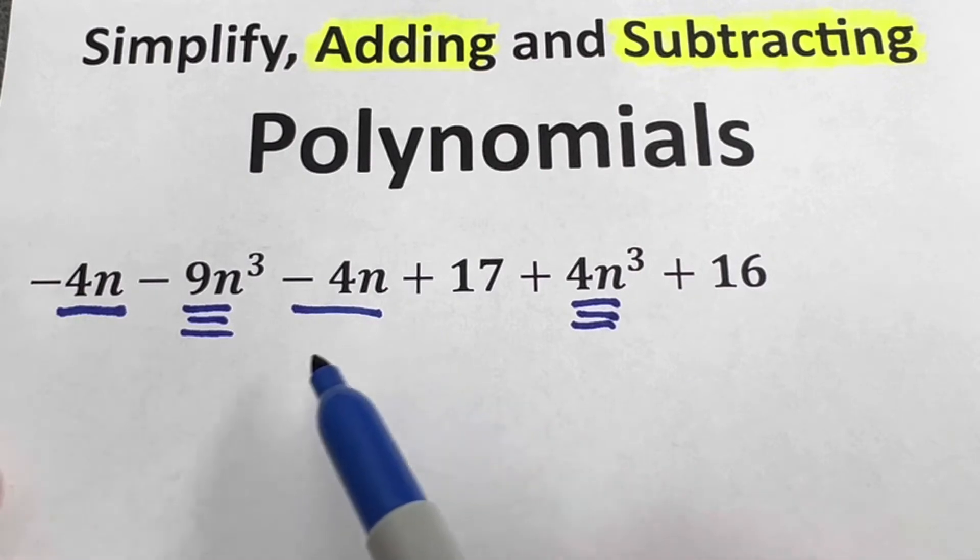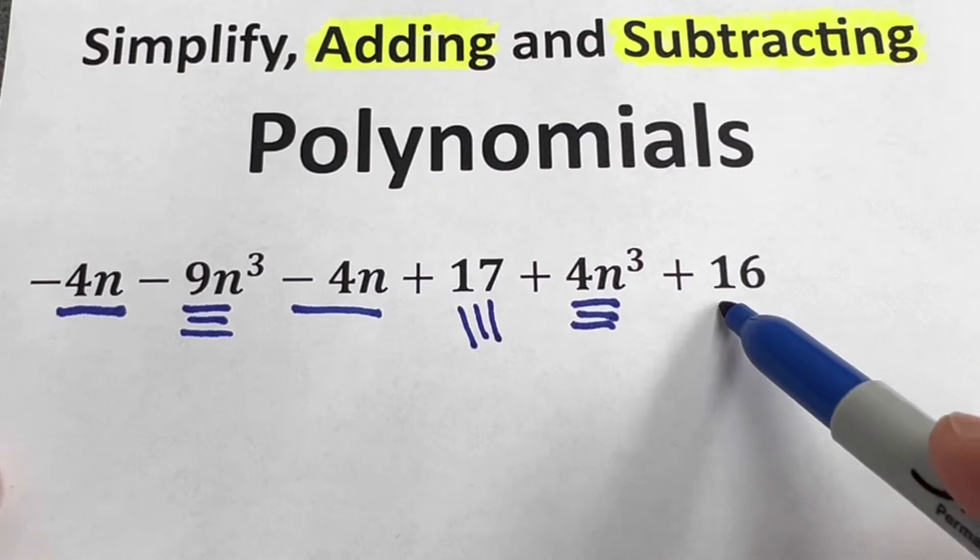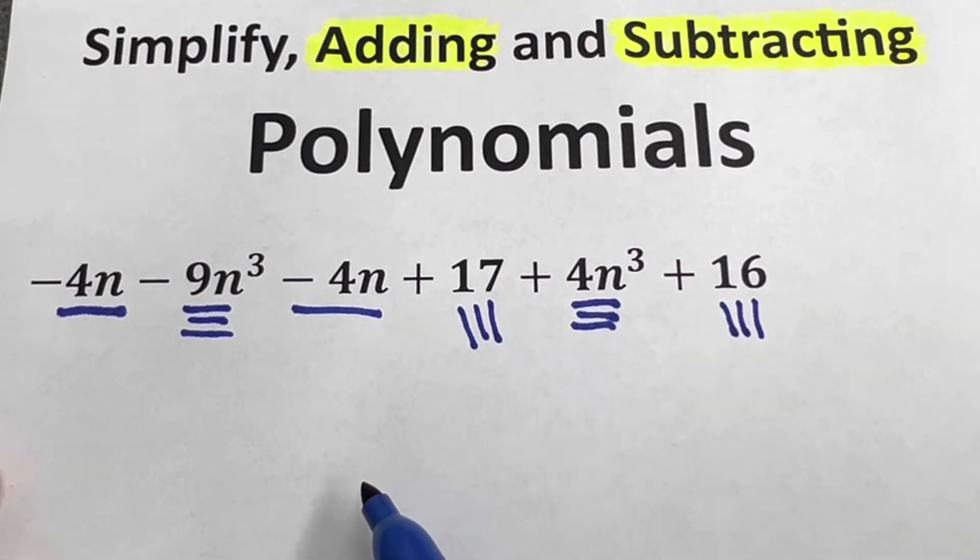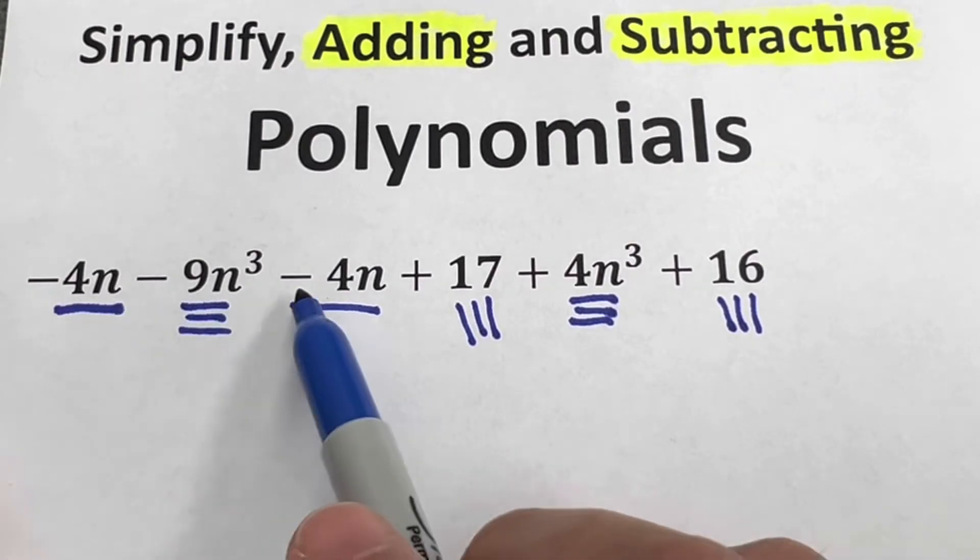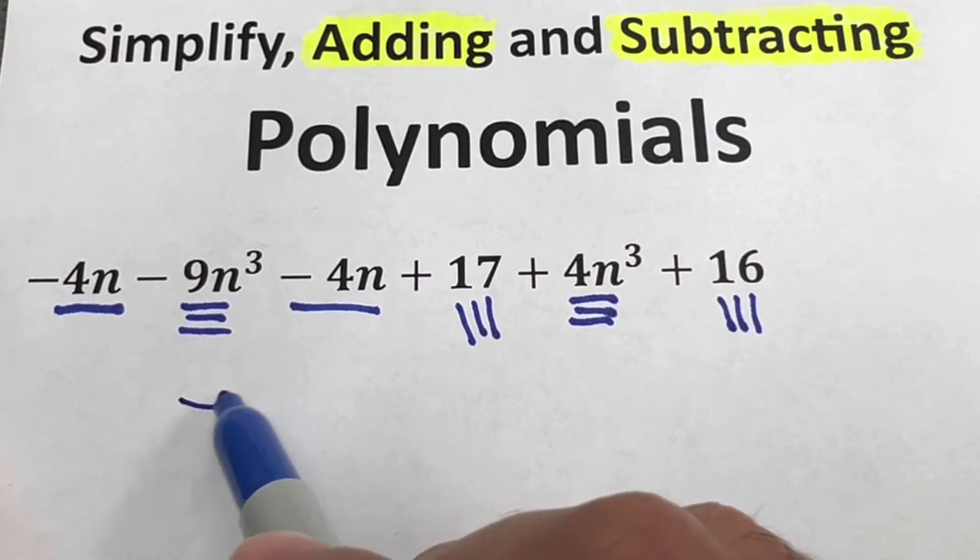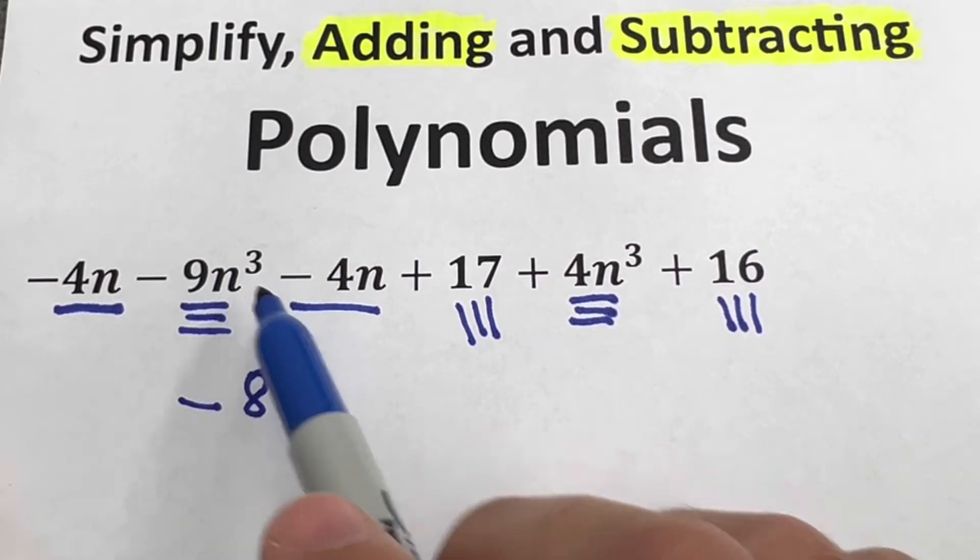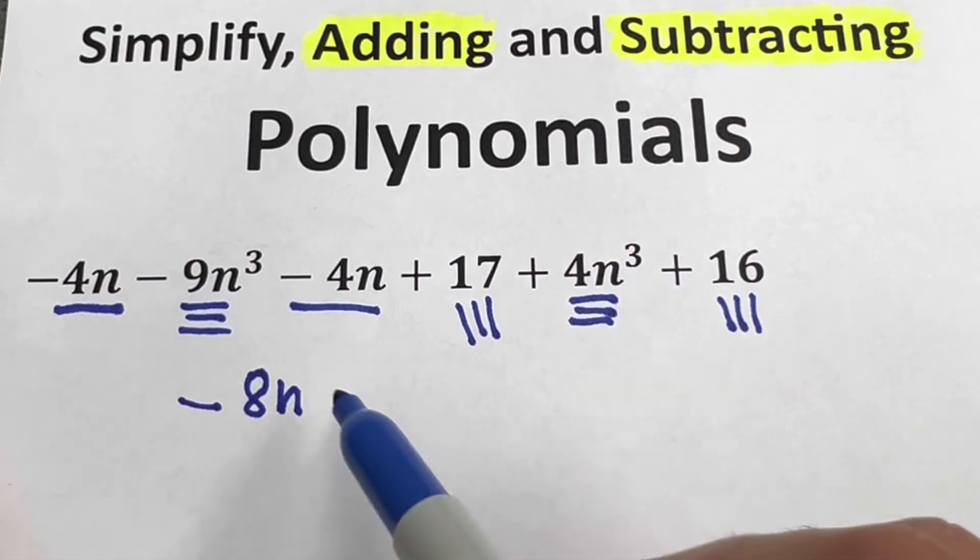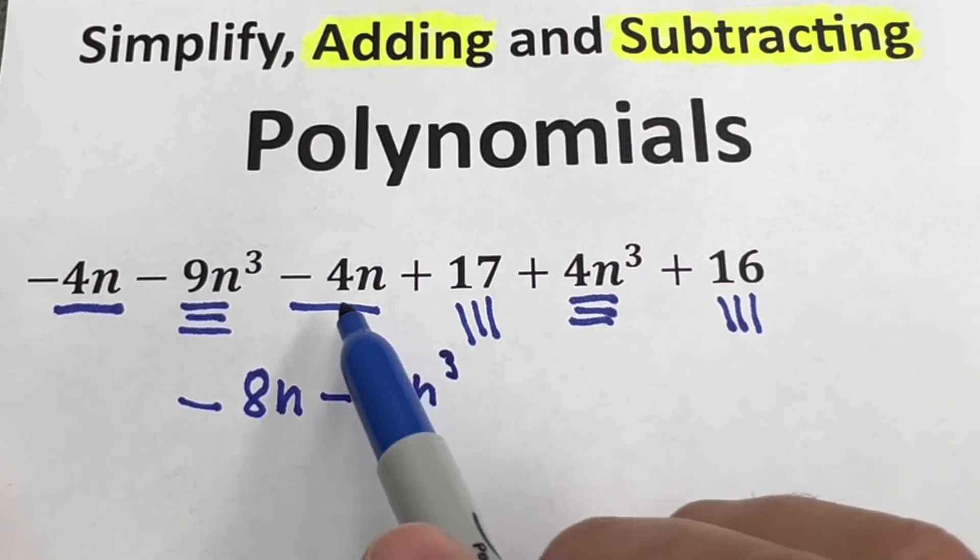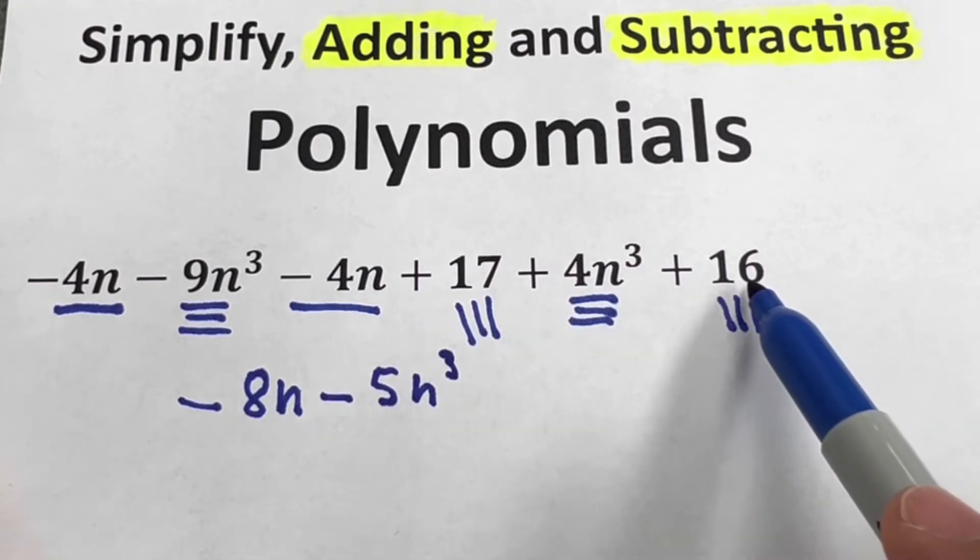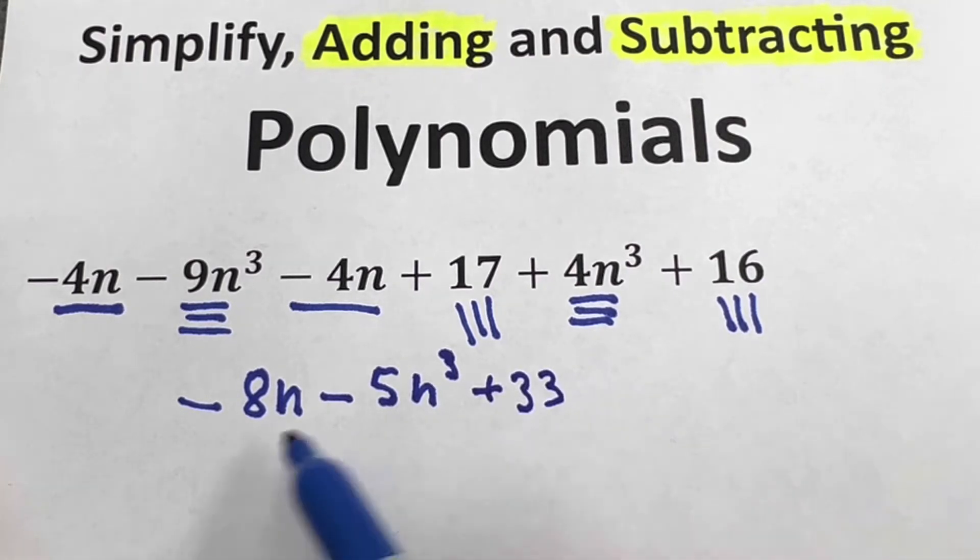I have 17 with 16, those are numbers. Now I'm going to add or subtract the like terms. -4n and -4n is -8n. -9n³ and 4n³ added is -5n³. And 17 and 16 added, that would be 33, so plus 33. This will be the answer.